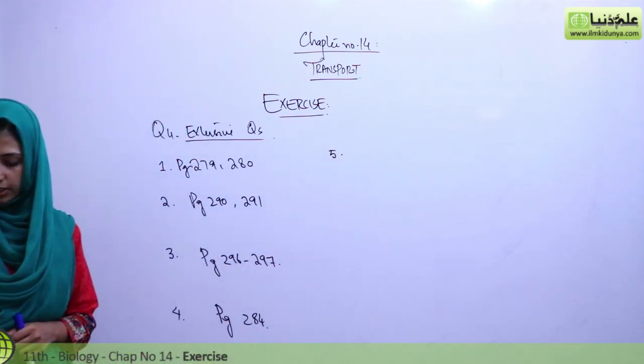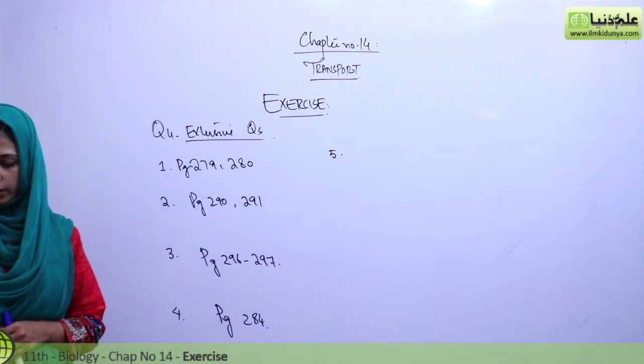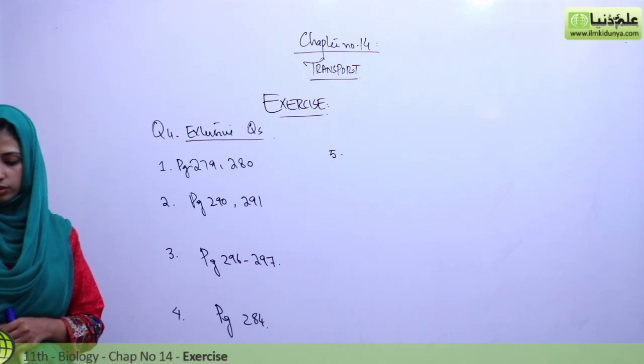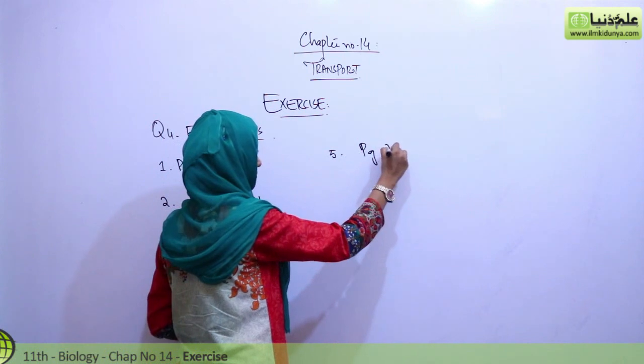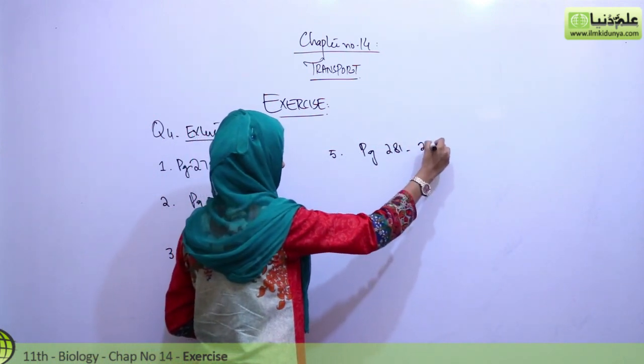Fifth question, explain apoplast, symplast, and vacuolar pathways and describe the movement of water and dissolved materials through them. This is on page 281 and 282.